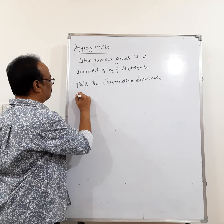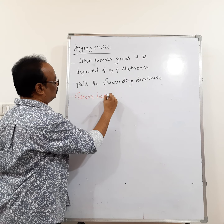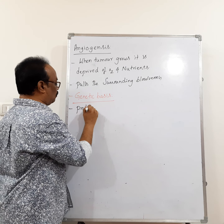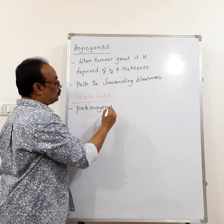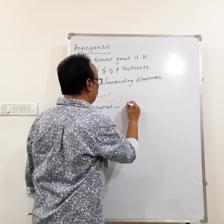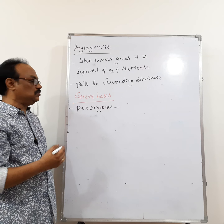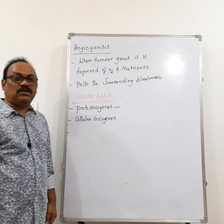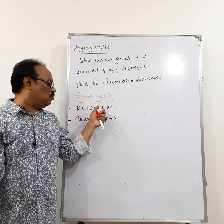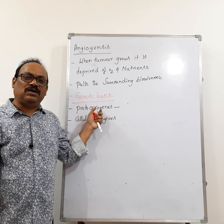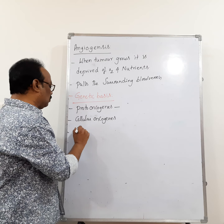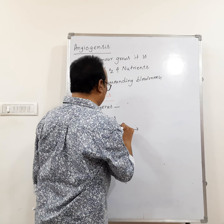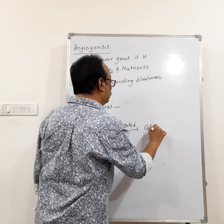Now let us see the genetic basis of tumors. There are genes called proto-oncogenes, which are genes present in cells that can stimulate tumor formation. There are also cellular oncogenes, which are genes present in normal cells. When proto-oncogenes are mutated, they develop into cellular oncogenes — the tumor-forming genes.